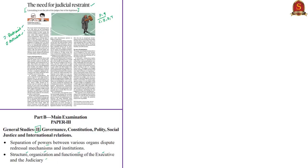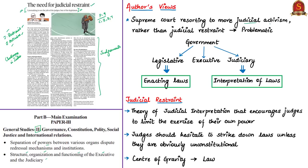Some judgments by the Supreme Court on various issues have been given throughout the editorial. You can use these judgments for explaining the two concepts of judicial restraint and judicial activism. Additionally, we shall also see the challenges that are faced in India because of judicial activism. The central theme of this editorial is that lawmaking is not the job of the judges but of the legislature. The author's view is that the Supreme Court is resorting to more judicial activism rather than judicial restraint, which the authors view as a problematic approach.